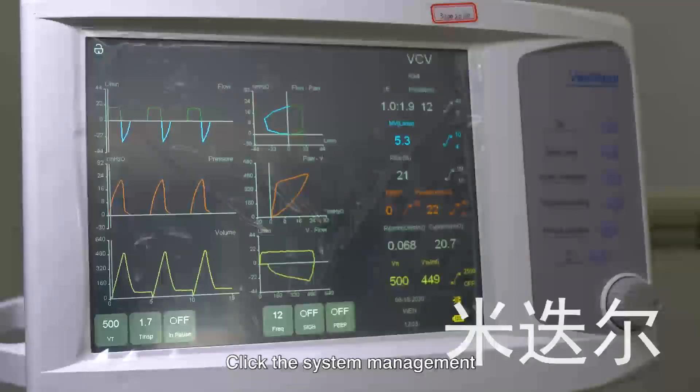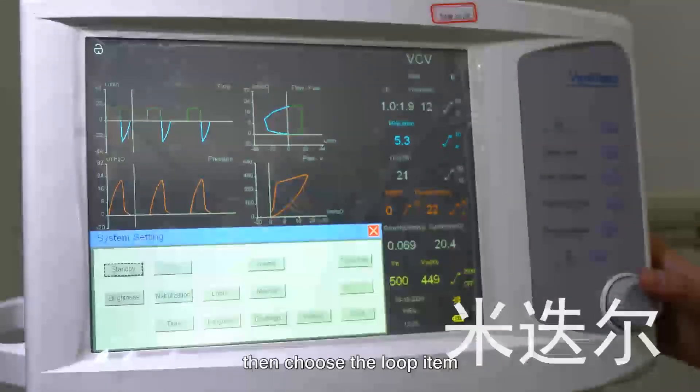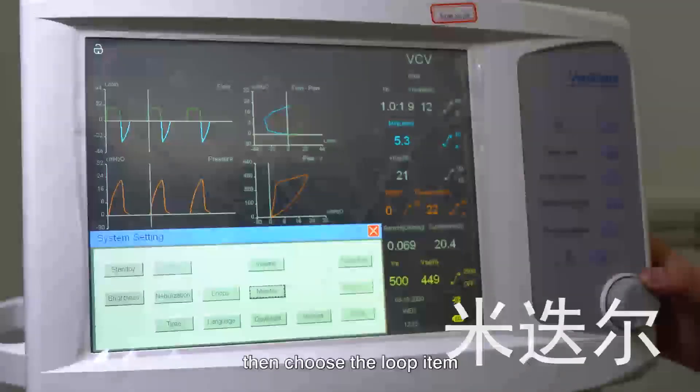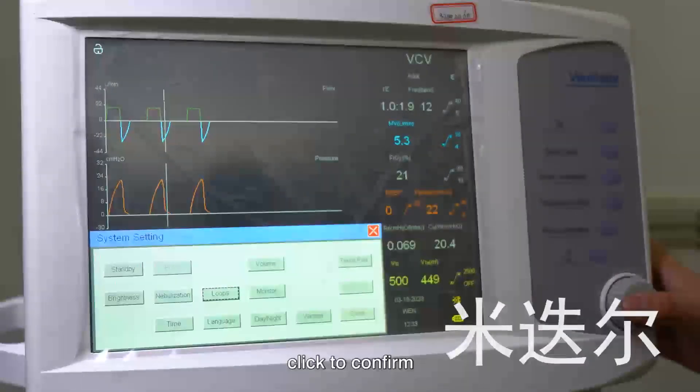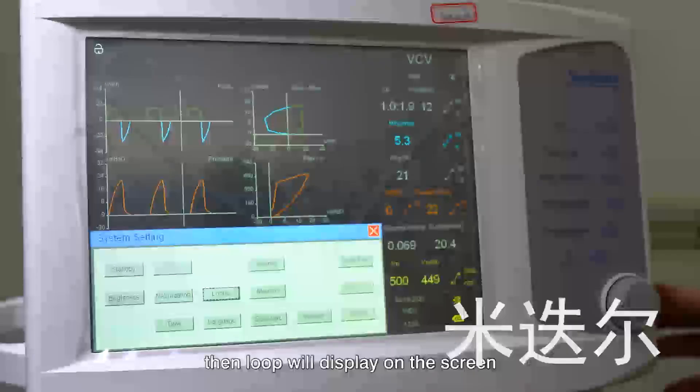Click the system management, then choose the loop item. Click to confirm, then the loop will display on the screen.